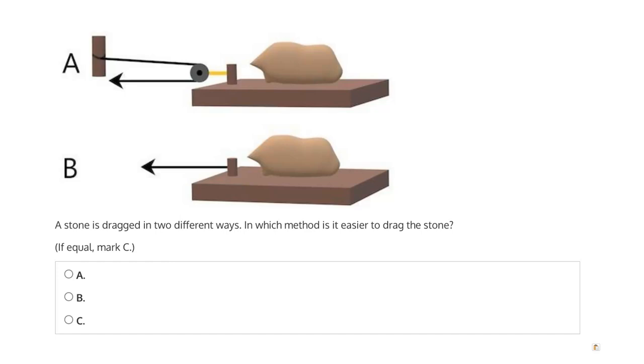This question says, a stone is dragged in two different ways. In which method is it easier to drag the stone? Method A, which employs a pulley. Method B, which pulls on the stone directly. Or if equal, then mark C.